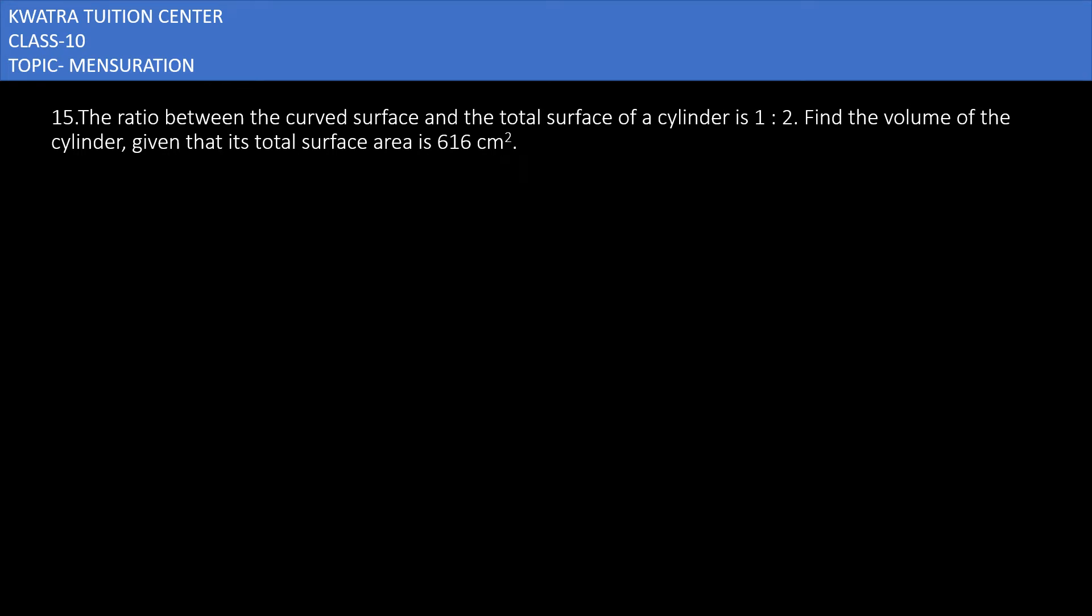Let's start with question number 15. It says the ratio between the curved surface and the total surface of a cylinder is 1:2. Find the volume of the cylinder given that its total surface area is 616 centimeter square.